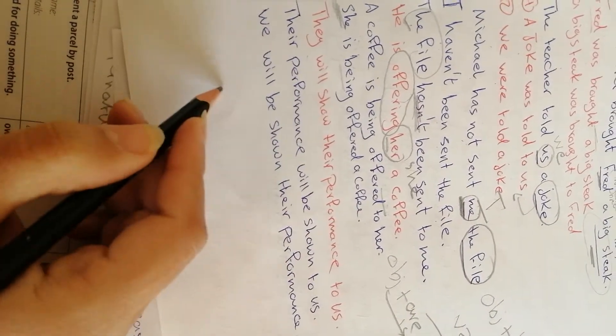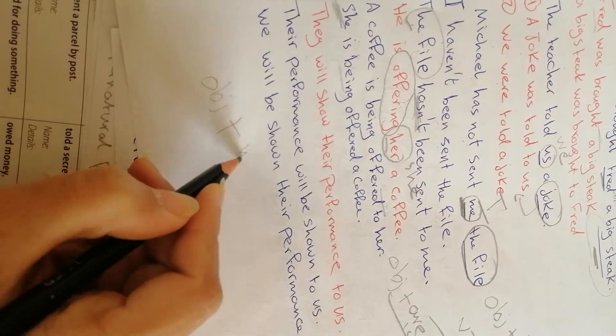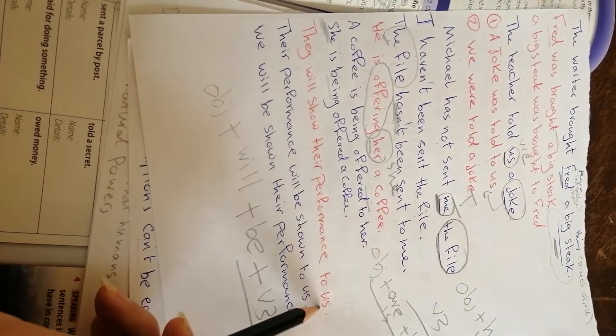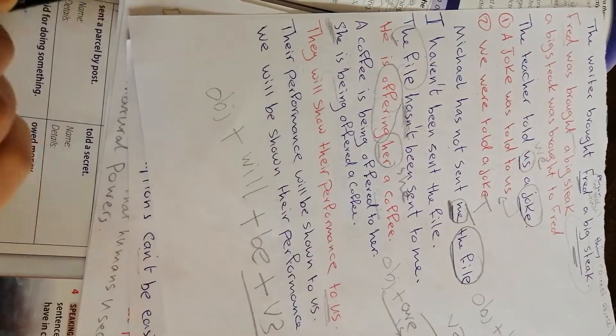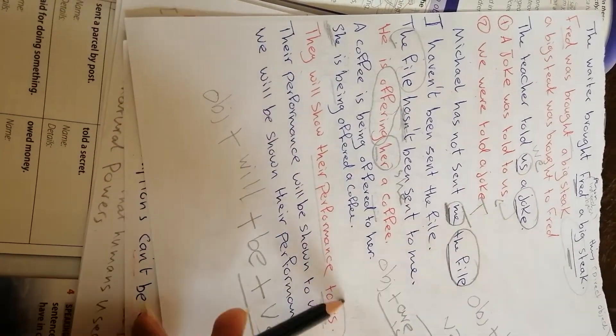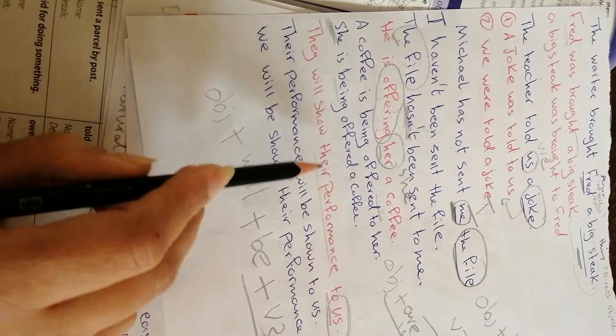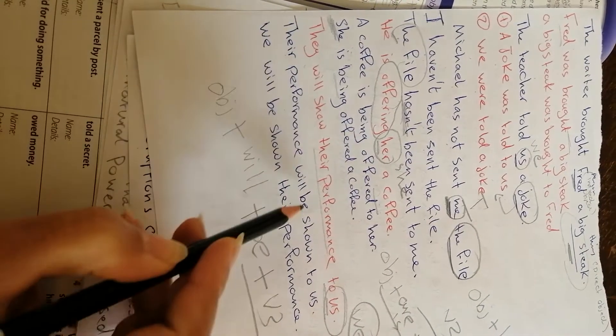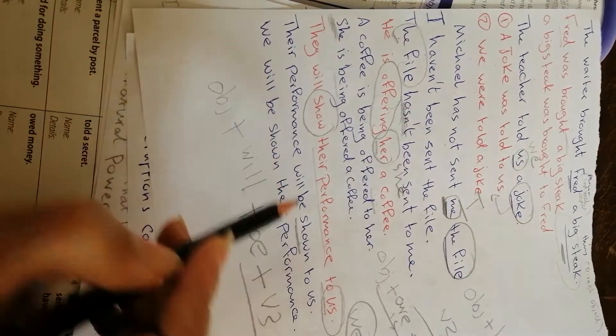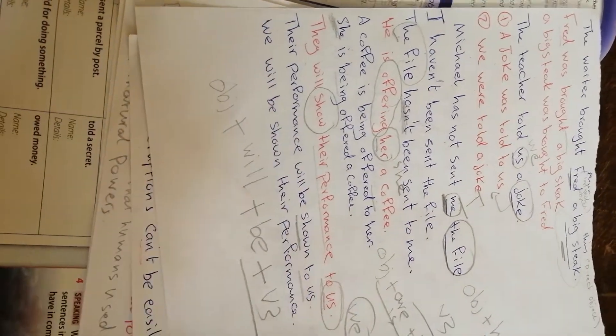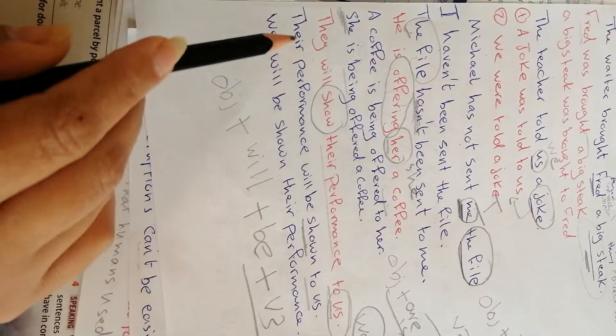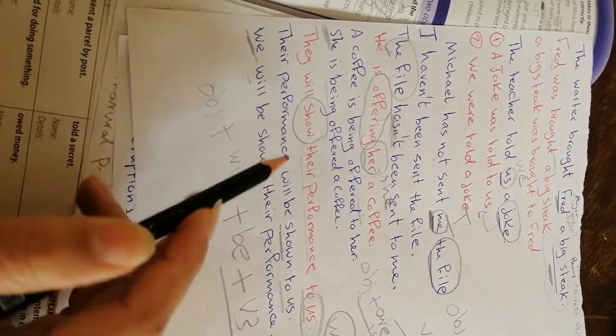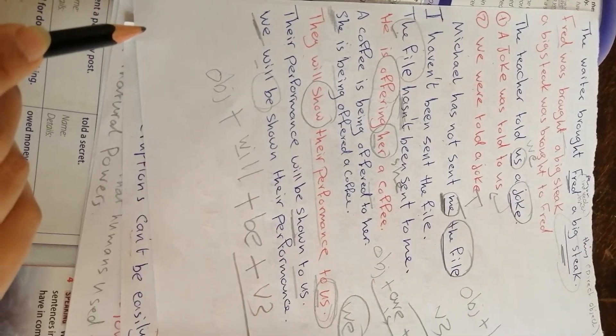This one is in the future. What is the rule of the future? Object plus will plus be plus verb 3. They will show their performance to us. We have their performance and us, direct and indirect. Their performance, according to the rule, will be, and verb 3 from show is shown. Their performance will be shown to us. When we want to make a passive using the indirect object, we change us into we. We will be shown their performance.